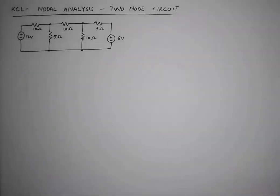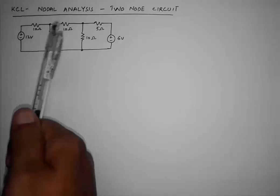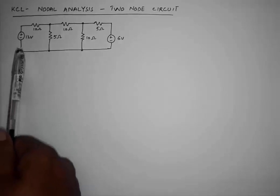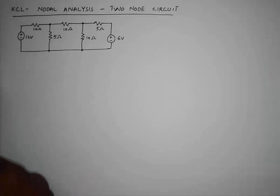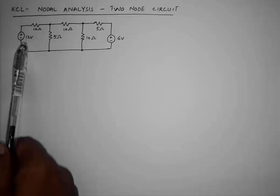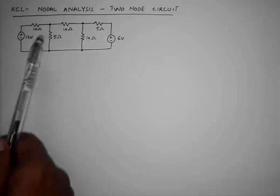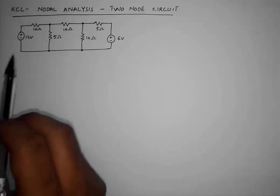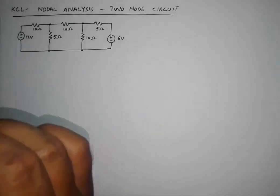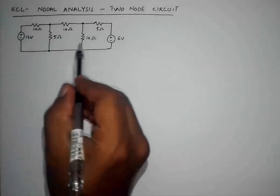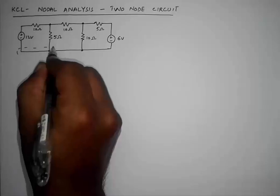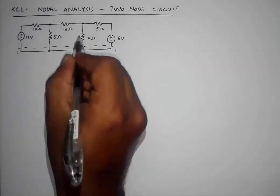Welcome back to nodal analysis. Today we are going to solve a circuit with two nodes — one and two — and a reference node. There are multiple sources: a 12-volt and a 6-volt source, and there are five elements. First of all, we will select a reference node — the one with most elements connected to it. We select this node because four different elements are connected to it.